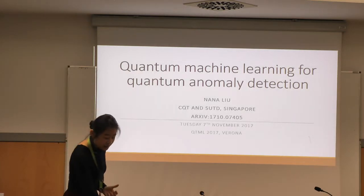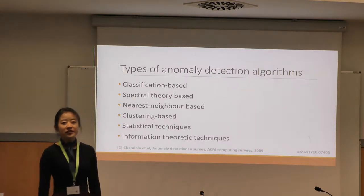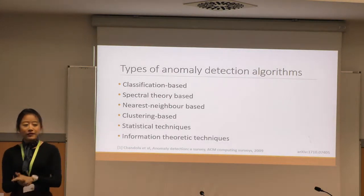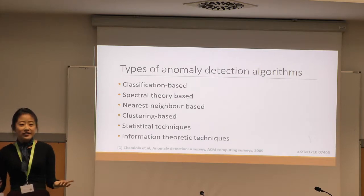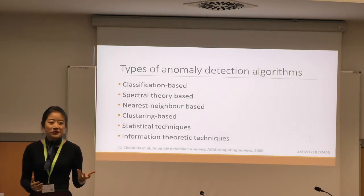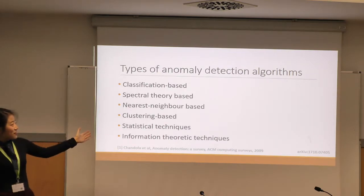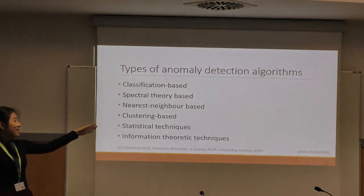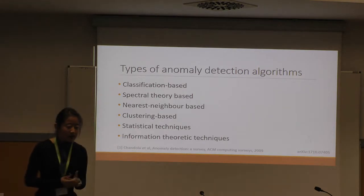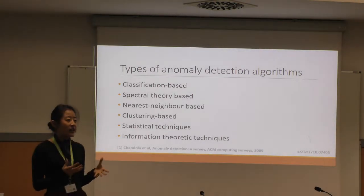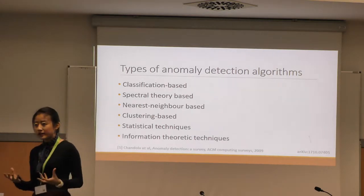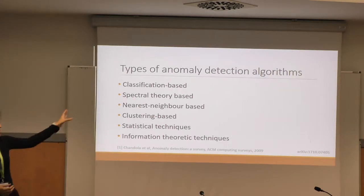We want to take a first step in that direction. Before we go on, we have to look at the classical literature. Anomaly detection is an enormous field in the classical literature in its own right, with a whole lot of algorithms. The reason why there are so many algorithms is that there are so many different kinds of anomalies and situations under which we want to detect them.